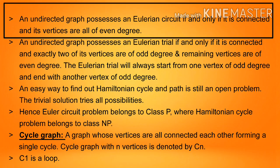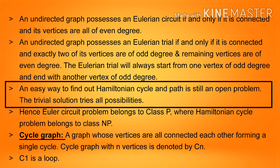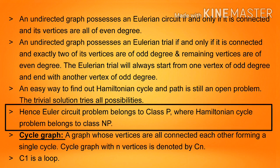An undirected graph possesses an Eulerian circuit if and only if it is connected and all its vertices are of even degree. An undirected graph possesses an Eulerian trail if and only if it is connected and exactly two of its vertices are of odd degree, with remaining vertices of even degree. The Eulerian trail starts from one vertex of odd degree and ends at another vertex of odd degree. Finding a Hamiltonian cycle and path is still an open problem; the trivial solution tries all possibilities. Hence, the Euler circuit problem belongs to class P, while the Hamiltonian cycle problem belongs to class NP.